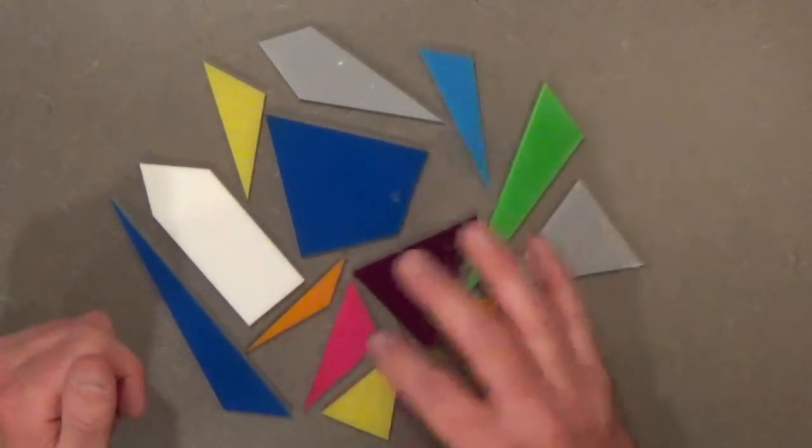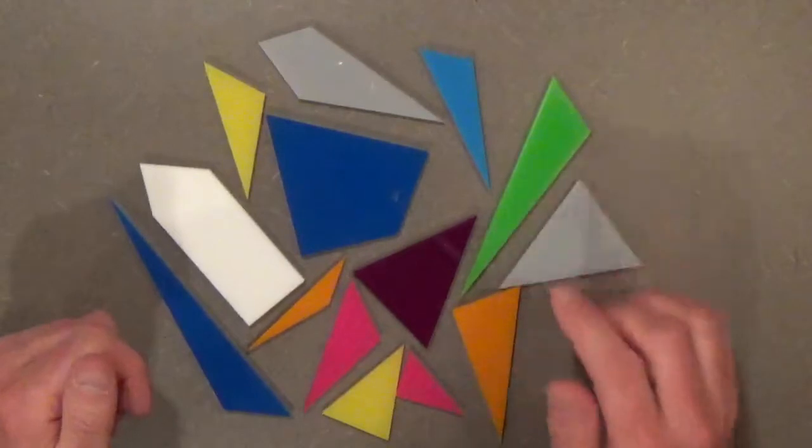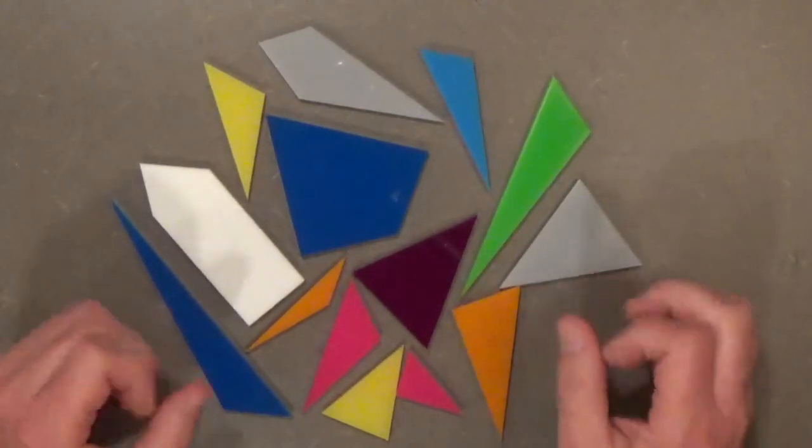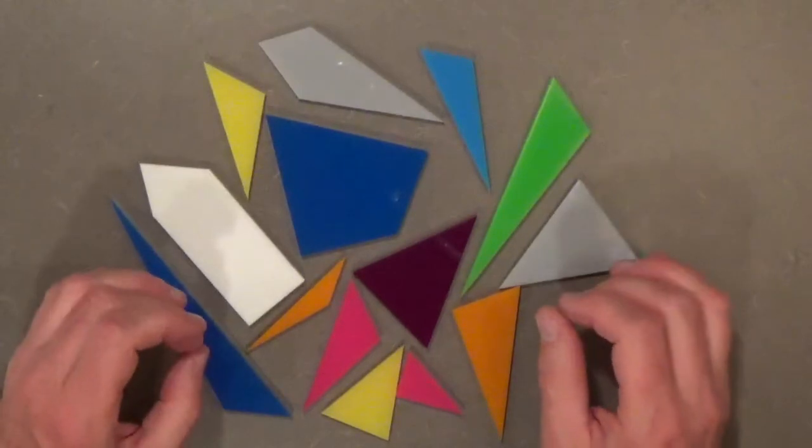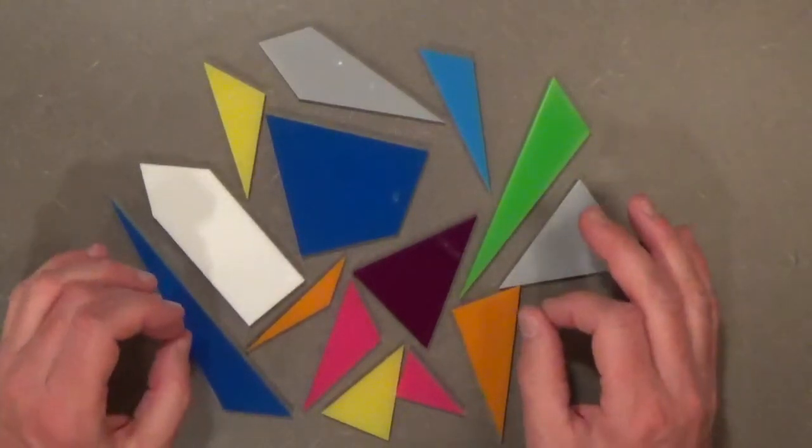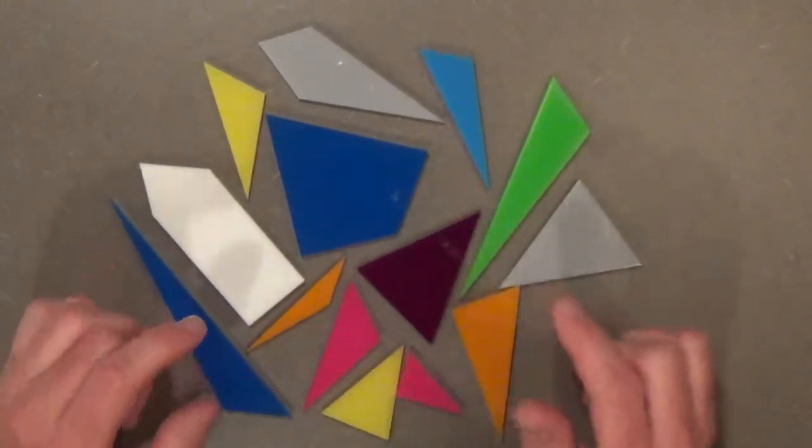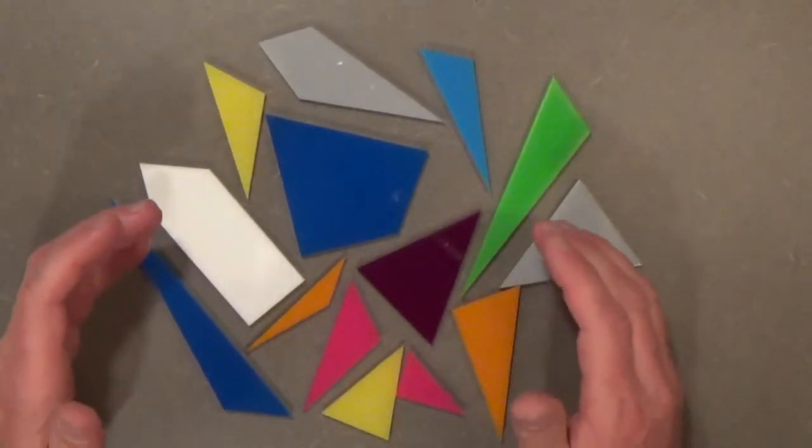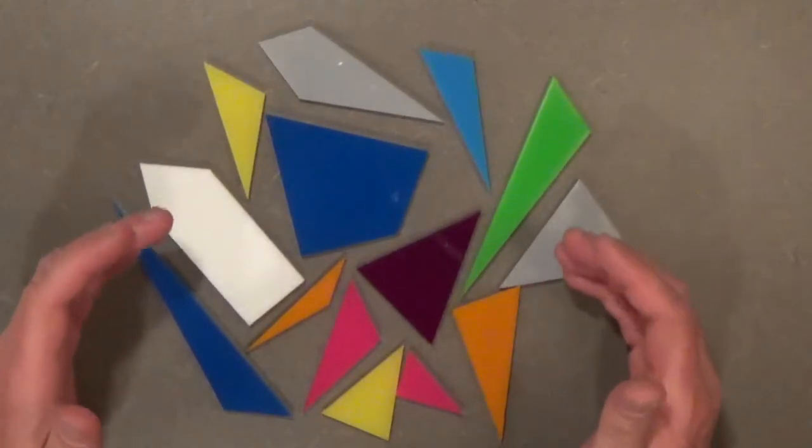Well, the beauty of this puzzle is that square can be built 536 different ways, and not mere image ways, but 536 unique ways. It's an amazing puzzle.